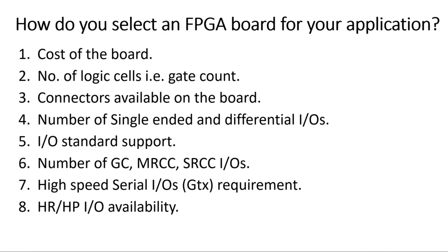The eighth point is HR and HP IO availability. HR stands for High Range and HP stands for High Performance IOs. High Range IOs can operate at almost all operating voltages, whereas High Performance IOs cannot operate at all voltages — but HP IOs offer higher performance compared to HR IOs. As per your application need, you must determine how many HP or HR IOs are required and choose your FPGA board accordingly. There are other important differences between HR and HP IOs, but we will cover those in a separate video.